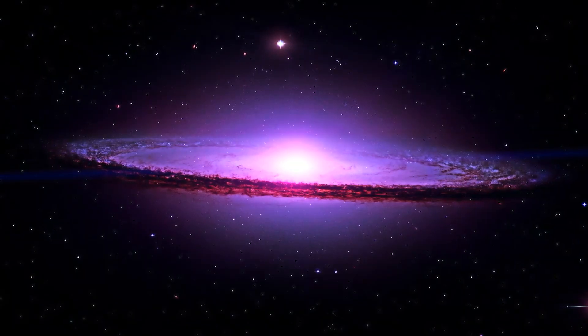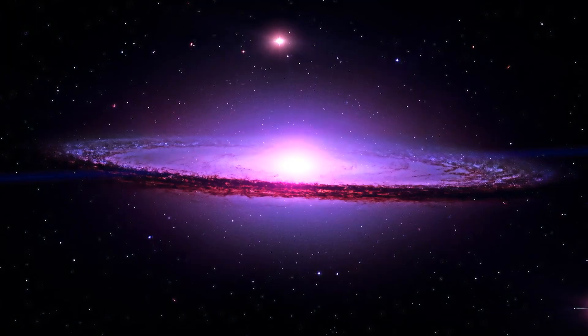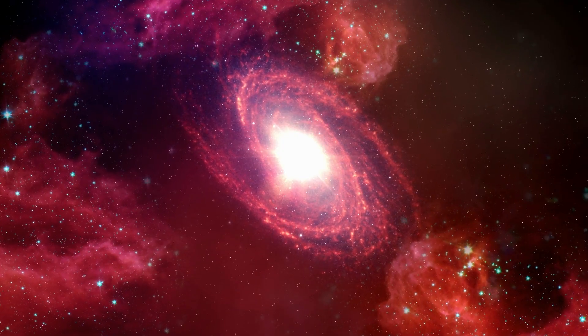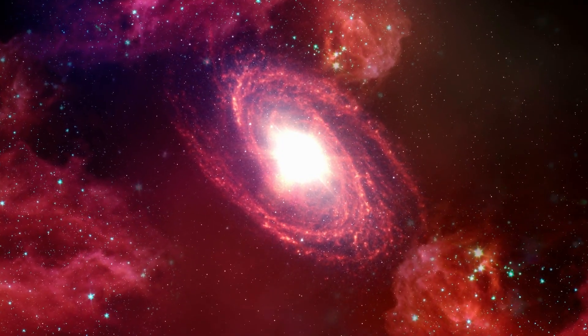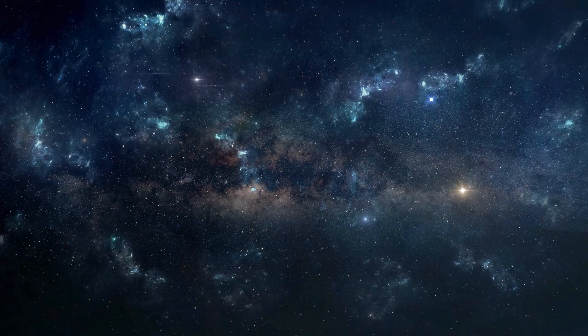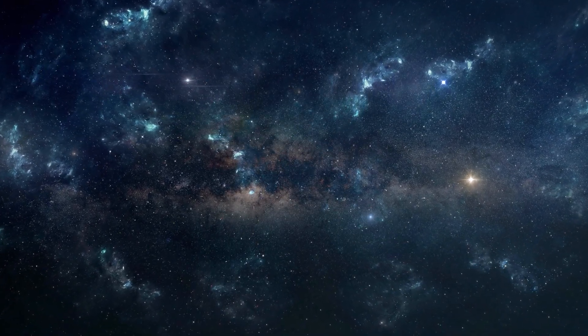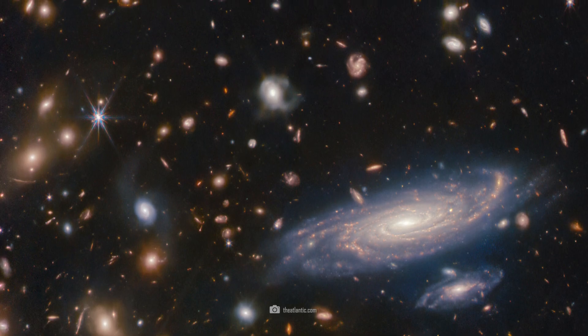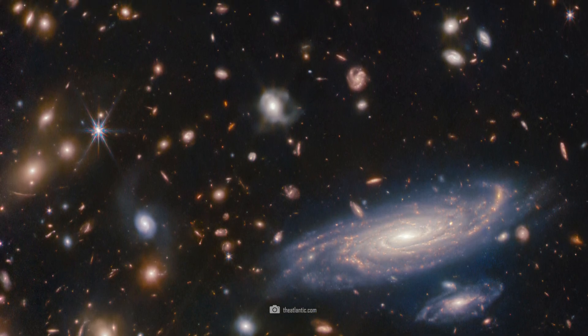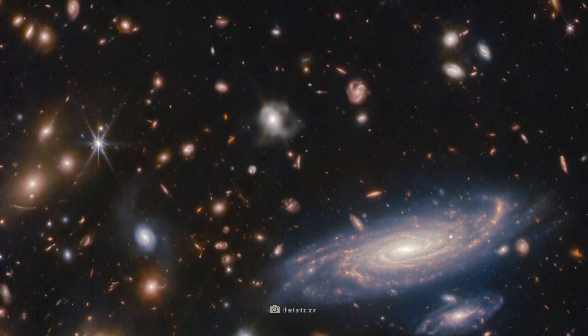They all have a redshift of Z at about 14, which means that they existed at a time dating back to the Dark Ages or even before. These discoveries turn our previous cosmological models upside down. According to these models, such massive and bright galaxies should not have existed at this early time in the universe.